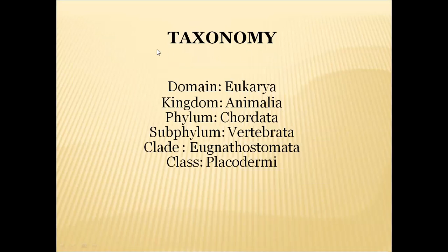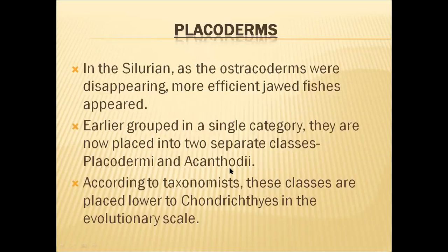Now let us discuss the origin and salient features of Placodermi in detail. The taxonomy of Placodermi places them under domain Eukarya, kingdom Animalia, phylum Chordata, subphylum Vertebrata, division or clade Gnathostomata, and class Placodermi. During the Silurian period, the ostracoderms were disappearing — they were on the verge of extinction.